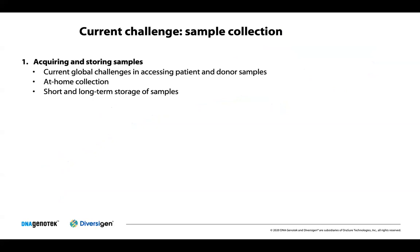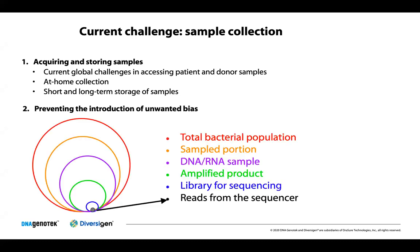One critical challenge in any study is being able to acquire the right type and the right number of samples. In our current global state facing the COVID-19 pandemic, this has become an even larger obstacle to accessing high-quality patient and donor samples. These issues underscore the need for reliable at-home collection options and for being able to store and save samples for short and longer term. A second large challenge of any study, microbiome or otherwise, is preventing the introduction of unwanted bias or noise into your sample process.